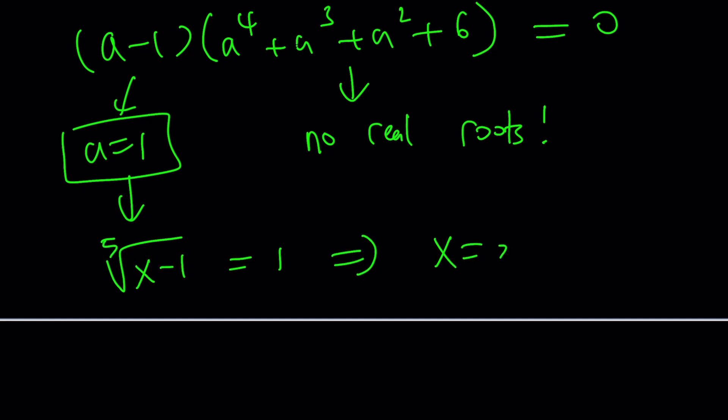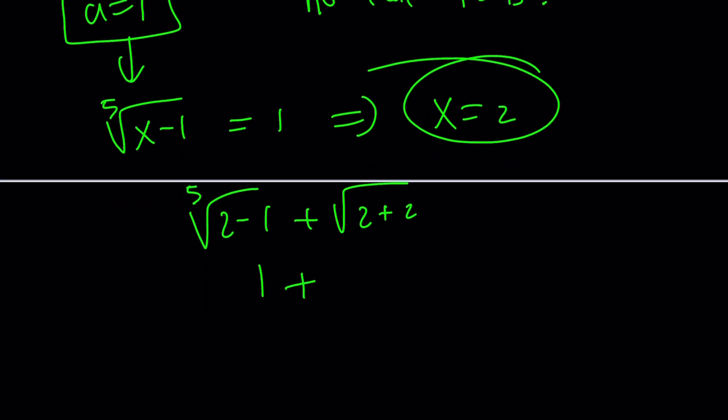A equals 1 gives us the fifth root of X minus 1 equals 1, because that's A, and from here we get X equals 2. If you test it out, you're going to realize, yes, that indeed worked, because the fifth root of 2 minus 1 plus the square root of 2 plus 2 is equal to 1 plus 2, which is 3. Yay, we got a solution, Houston. That's awesome.